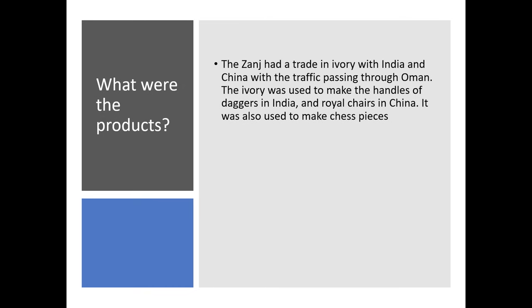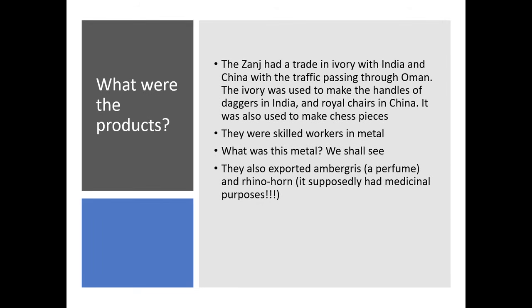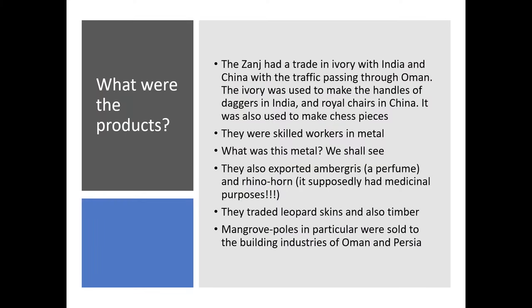Because of this six-month stopover, ideas and cultural artifacts spread between the two regions. Scholars don't know whether the typical East African front door is East African or Indian — in India there's something called Gujarat style that looks just like East African, and we truly don't know who got it from whom. Trading products included ivory with India and China, with traffic passing through Oman; ivory was used to make dagger handles in India and royal chairs in China. The Zenge also exported ambergris, a perfume, and rhino horn — supposedly for medicinal properties. They traded leopard skins and mangrove poles, sold to the building industries of Oman and Persia.